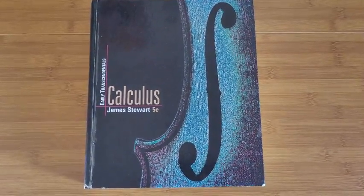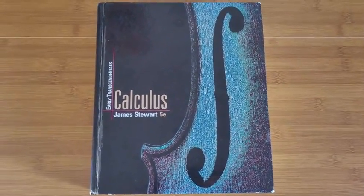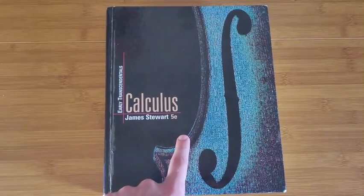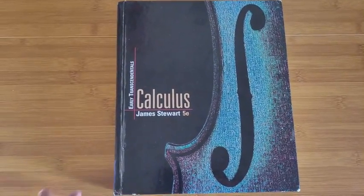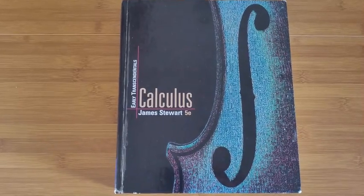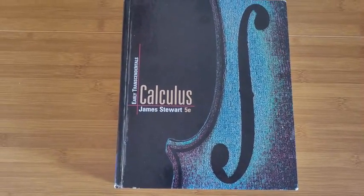So this is my review of Calculus Early Transcendentals by James Stewart, and this is going to be the fifth edition. Now, nowadays there are the eighth and ninth editions of this book, but this review basically applies to any edition of this book.